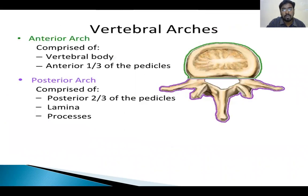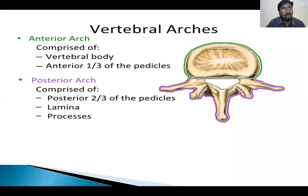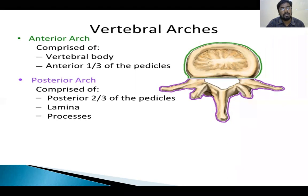Coming to the normal arches of the vertebra: the vertebra is divided into two arches — the anterior vertebral arch and the posterior vertebral arch. The anterior vertebral arch includes the body of the vertebra and one-third of the pedicle. The posterior vertebral arch includes the posterior two-thirds of the pedicle, the laminae, pars interarticularis, and the seven processes.